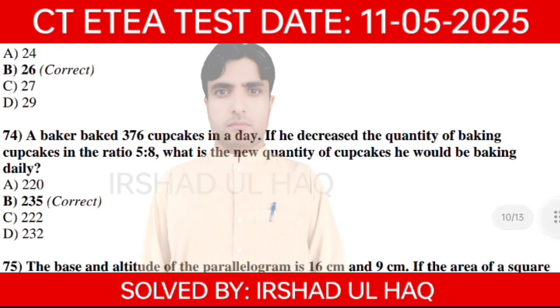A baker bakes 300 chocolate cupcakes in a day. If he decreases the quantity of baking, the answer is 200.5.